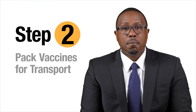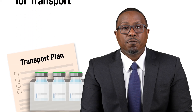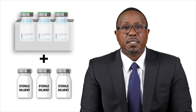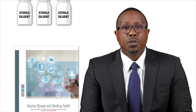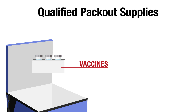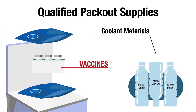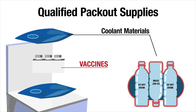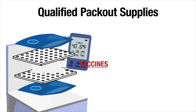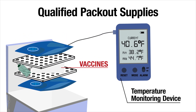Step two: pack vaccines for transport. Follow your facility's transport plan when packing refrigerated vaccines. If the vaccine requires a diluent, ensure there are equal amounts of vaccines and diluents. You can also refer to the CDC Storage and Handling Toolkit for detailed packing instructions. Pack-out materials used with your qualified containers can include coolant materials such as phase-change materials or conditioned water bottles for refrigerated vaccines, insulated materials like bubble wrap or corrugated cardboard, and a temperature monitoring device such as a digital data logger, or DDL.